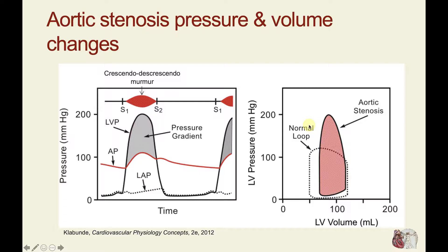Let's look at pressure changes within the left ventricle and left atrium, and the genesis of the murmur associated with aortic stenosis. This is our cardiac cycle diagram showing left ventricular pressure, aortic pressure, and left atrial pressure below. Normally, left ventricular pressure is just slightly above aortic pressure during the rapid ejection phase. But with significant aortic stenosis, this pressure might be 200 millimeters of mercury during systole, and the difference between left ventricular pressure and aortic pressure is the pressure gradient across the valve.